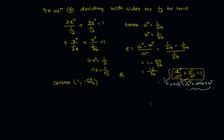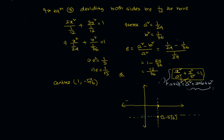For the given equation of the ellipse, we have the center. Since we shifted the origin to (1, −5/6), the center of the ellipse is (1, −5/6).